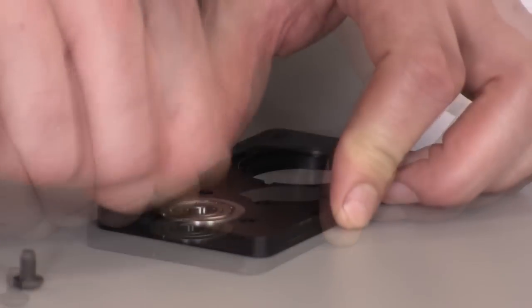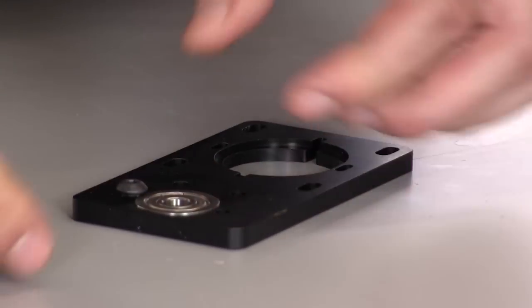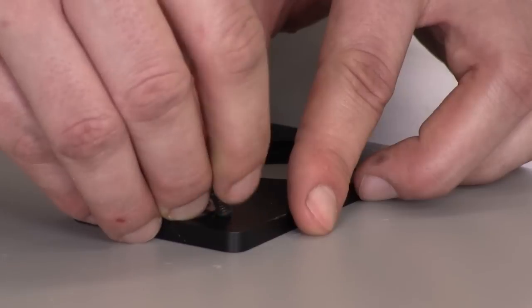When you've inserted the flanged bearing, it should be flush with the Z-plate. If it's not, press a little harder to get it in place.